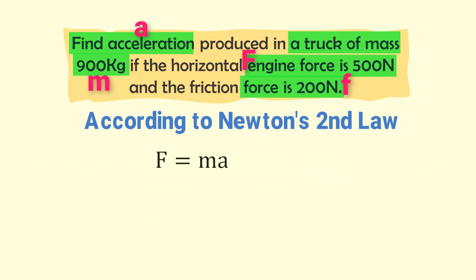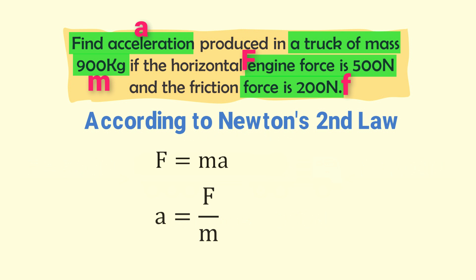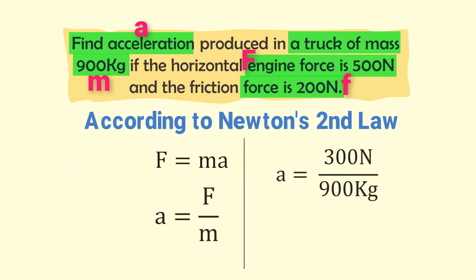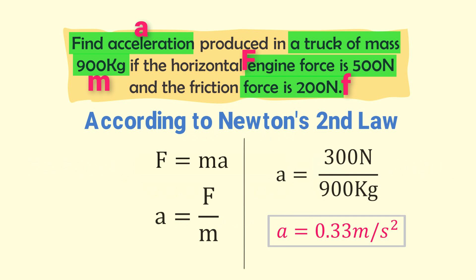According to Newton's second law of motion, F is equal to MA. Rearranging, A is equal to F divided by M. Plugging in the values: A is equal to 300 newtons divided by 900 kg. As a result, A is equal to 0.33 meters per second squared. So this 300-newton net force will produce 0.33 meters per second squared acceleration in the truck.